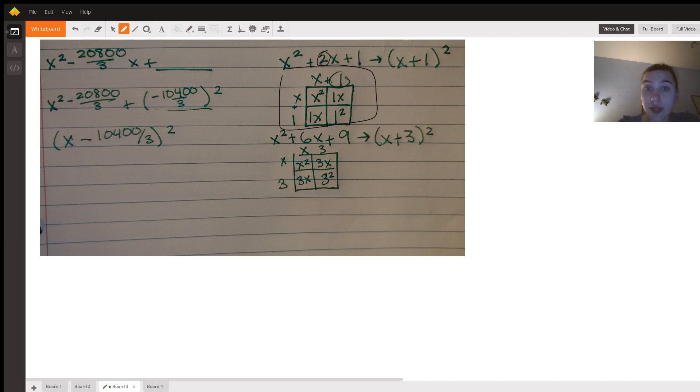So the 2 becomes a 1. And down here, the 6 becomes a 3. And then we square it to get this third number. So a 1 and a 9. Which means that if we go over to this equation, to get that third number, all we would do is take this and half it, leaving 10,400 over 3, and then square it.